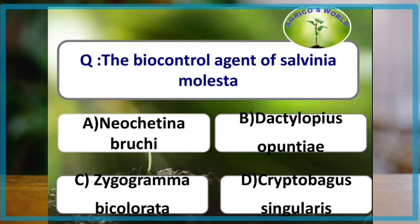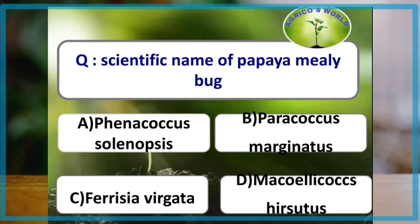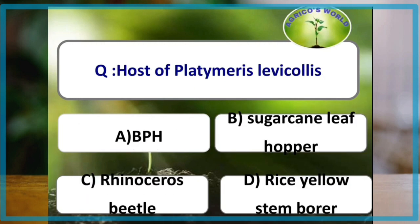The biocontrol agent of Salvinia molesta is Cyrtobagous singularis. The scientific name of papaya mealybug is Paracoccus marginatus. Which pest is the host of Platymerus laevicollis? The answer is the rhinoceros beetle.